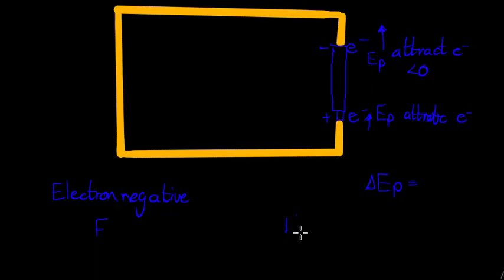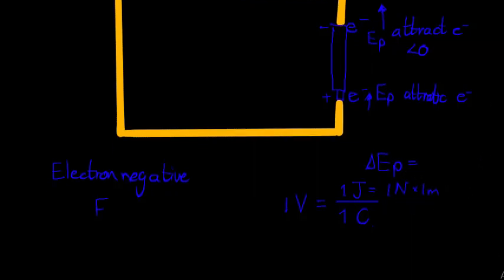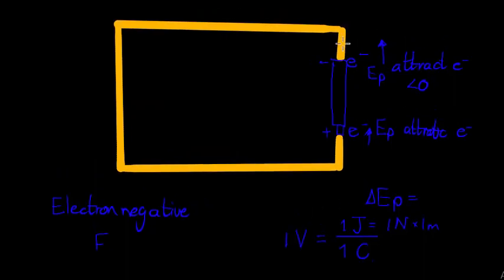When it comes to voltage: one volt represents one joule per one coulomb. Joule is the measure of energy — one joule means that a one-newton force is applied to move an object one meter. So one volt represents one joule of energy per coulomb. If I were to measure a voltage, I am literally measuring the difference in energies at two points.